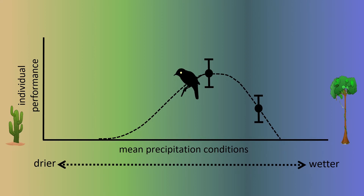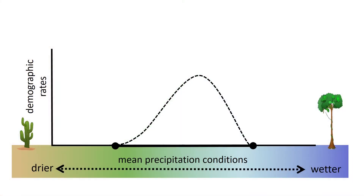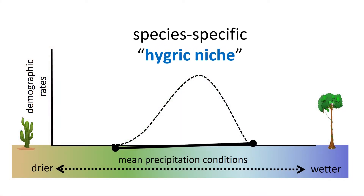Near the wetter and drier extremes, performance declines, eventually reaching lethal limits. The integrated responses of all individuals results in a species-level Hygric Niche, representing the range of precipitation conditions conducive to reproduction and survival for that species.